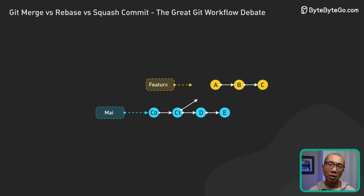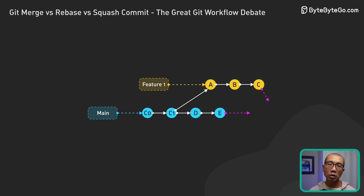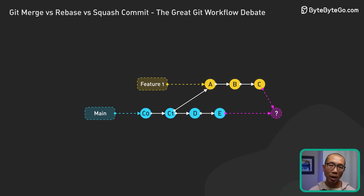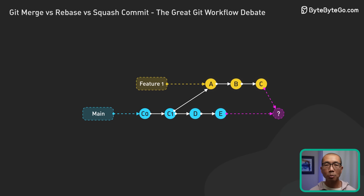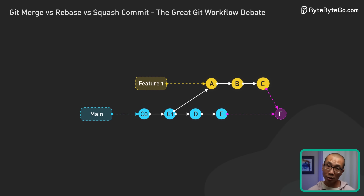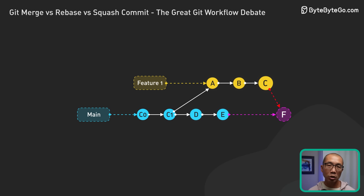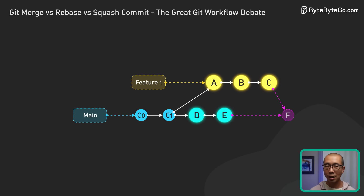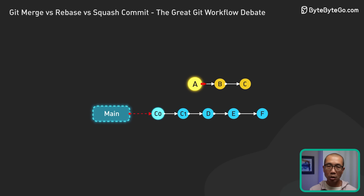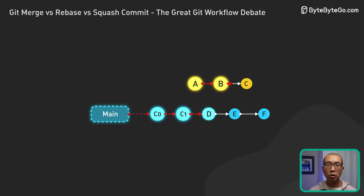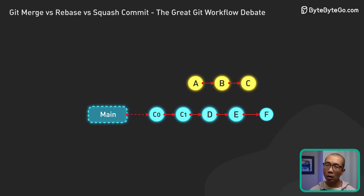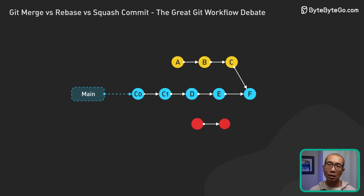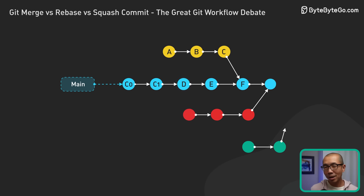Now, once we finish developing the feature, we'll want to get the feature branch back into the main branch. We have a few options for this. First is git merge — git will create a new merge commit that ties together the histories of both branches, like creating a knot in the rope that shows where the branches joined. But if we do this a lot, we end up with lots of knots, which can make the history a bit messy.